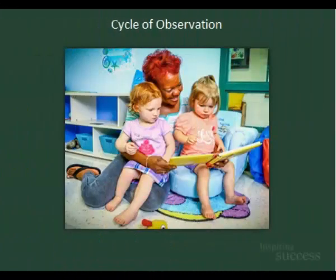Observation is a very valuable tool. It's an excellent way to track children's progress by measuring their growth and development. Observation should always be documented, such as through anecdotal notes. Here are the four stages of the cycle of observation. These stages guide educators in observing children and incorporating the results into future lessons.